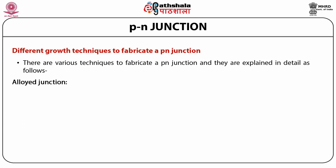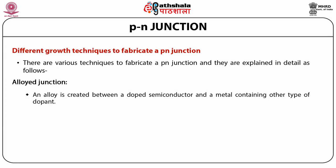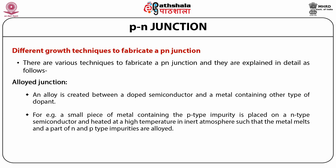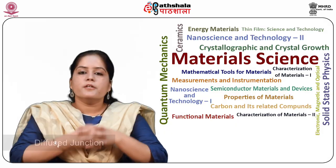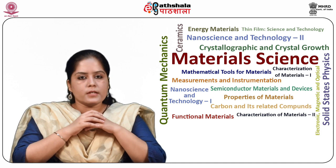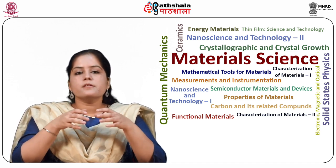The next technique is the alloyed junction. An alloy is created between a doped semiconductor and a metal containing the other type of dopant. For example, a small piece of metal containing p-type impurity is placed on an n-type semiconductor and heated at high temperature in an inert atmosphere, such that the metal melts and a portion of n- and p-type materials are alloyed. The molten portion is then cooled and solidified, forming a PN junction. The third technique is the diffused junction, where the p-type or n-type semiconductor is heated at high temperature in the presence of dopant gases.